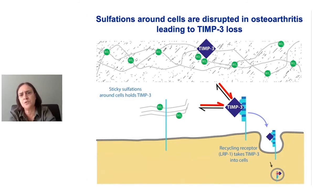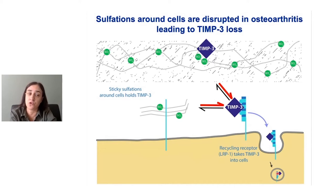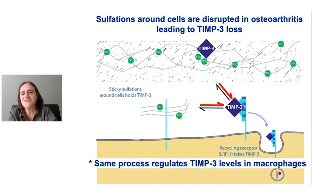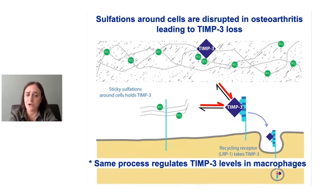We're now looking at possible ways to stop this recycling of TIM3 — ways to block its breakdown and restore normal levels so that we can stop the cartilage breakdown. We've also looked at this process in other tissues and found that this recycling process also regulates levels of TIM3 in macrophages — really important cells of our immune system. In these cells, this recycling process of TIM3 helps keep inflammation at a healthy level.